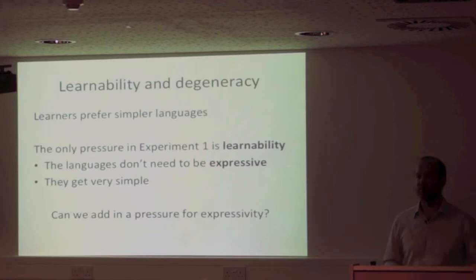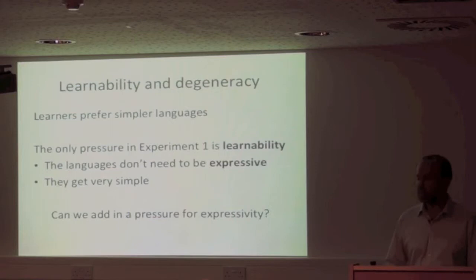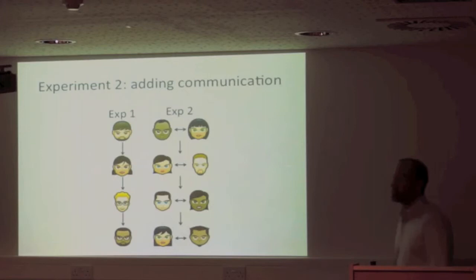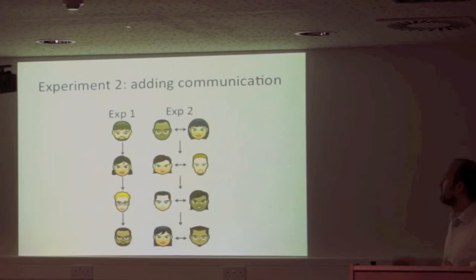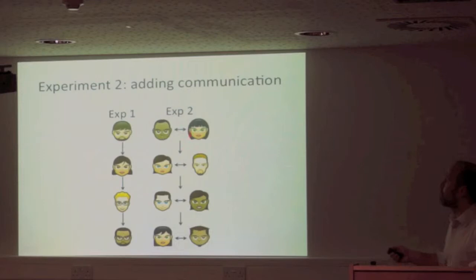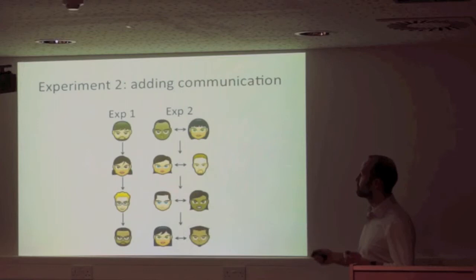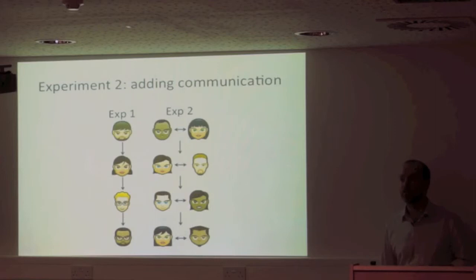Can we modify this experiment and reintroduce a pressure for expressivity — putting a brake on the learner-driven preference for simplicity? Rather than just learning a language, participants must learn it and then use it to communicate. In this setup, pairs of participants are trained on a random initial language and then use it to communicate with each other. The language they produce while communicating is used to train the next fresh pair, who learn it and then communicate, and so on.